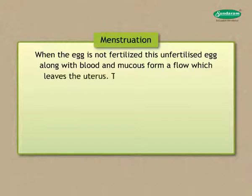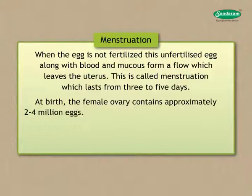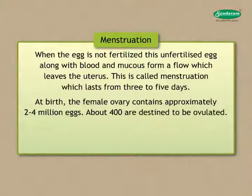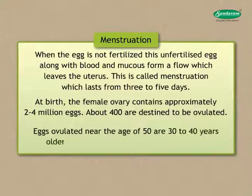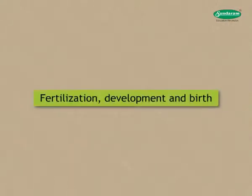When the egg is not fertilized, this unfertilized egg along with blood and mucus forms a flow which leaves the uterus — this is called menstruation, which lasts three to five days. At birth, the female ovary contains approximately two to four million eggs; after birth, new eggs are not added. Out of these, only about 400 are destined to be ovulated, while all others degenerate, so that only a few remain by age 50. Eggs ovulated near age 50 are 30 to 40 years older than those ovulated just after puberty, and this aging of eggs can cause defects in children born to older women.